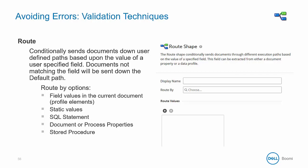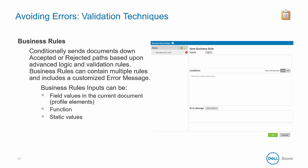Documents not matching the field will be sent down the default path. Imagine a scenario where a status could be set to active, inactive, or left as null. The route shape allows you to evaluate this field and send documents down different paths to be transformed or queried for missing data before doing any further processing. The business rule shape works with the profile structure of the document and applies user-defined business rules to accept or reject the document. For batch documents with multiple records, the business rule shape iterates through the whole document to accept or reject the entire document. To process each record individually, you would need to split your batch document prior to the business rule shape.